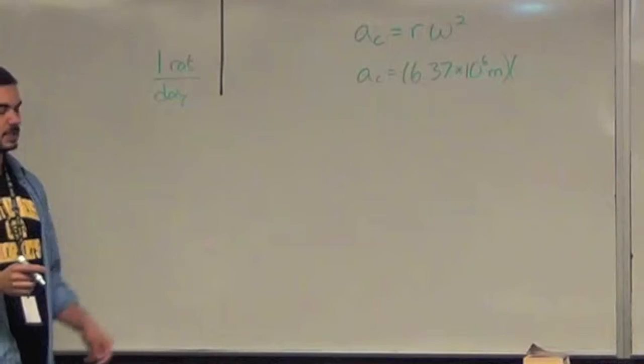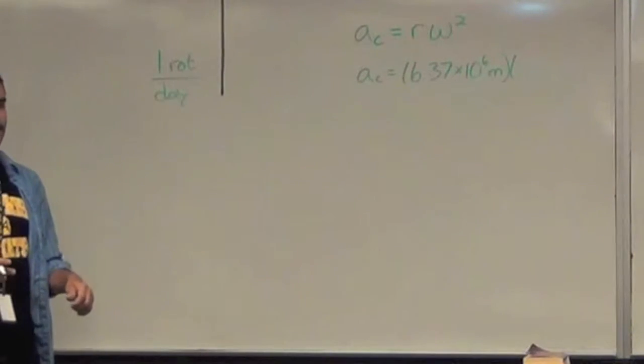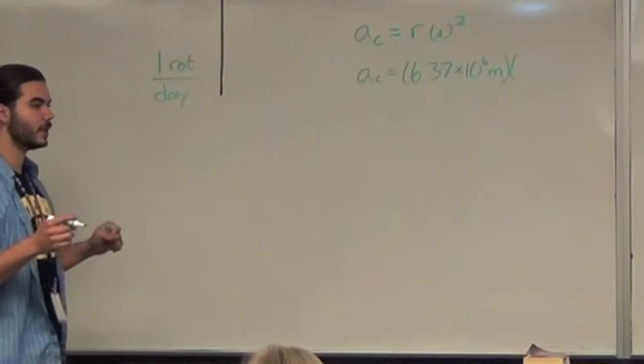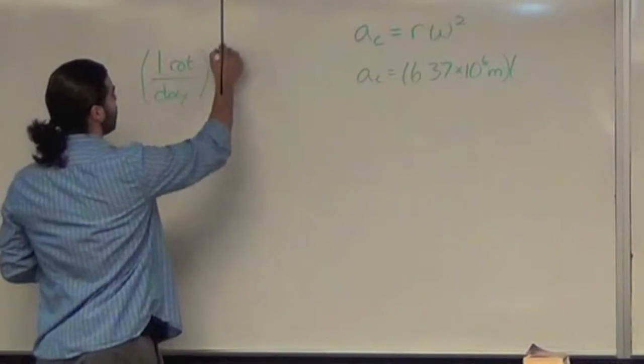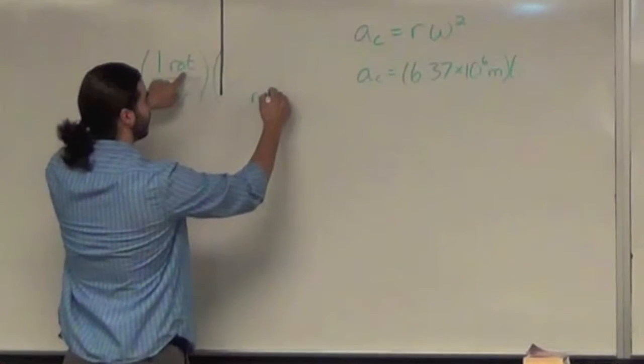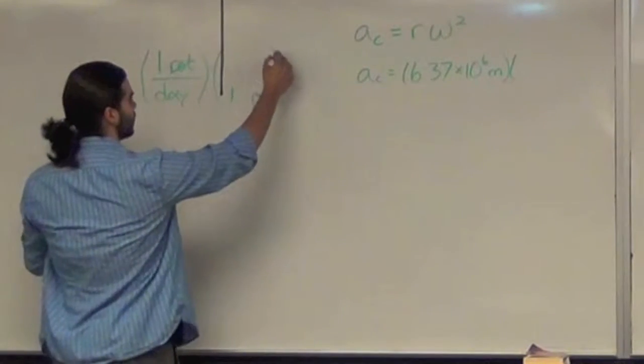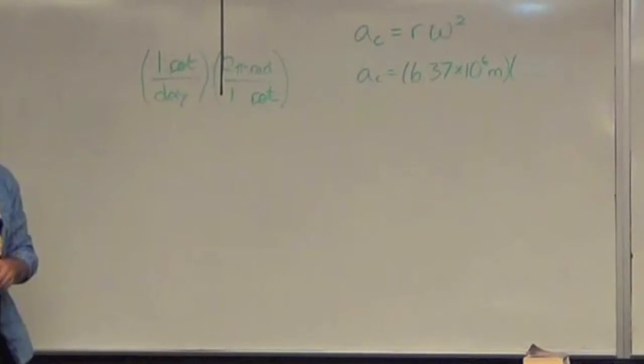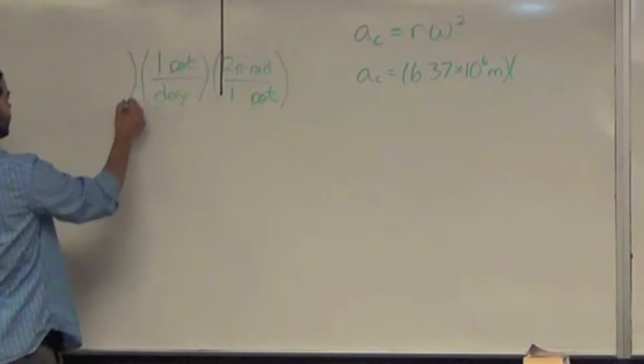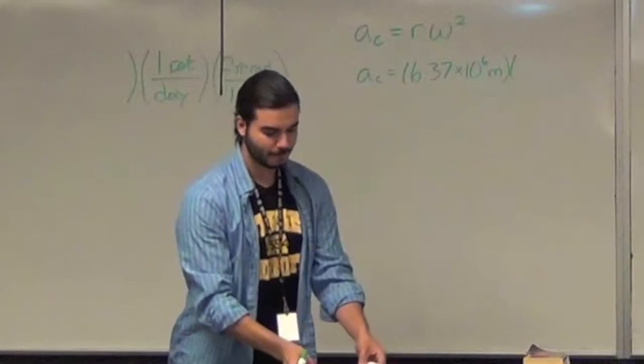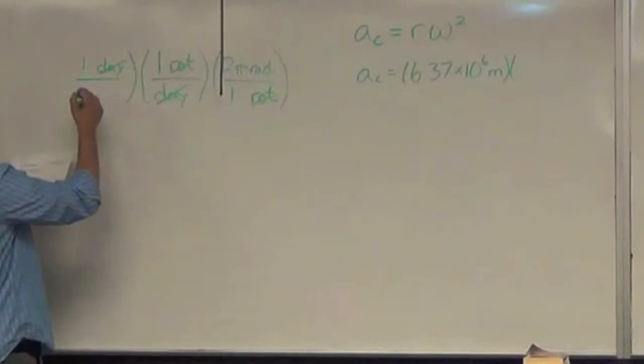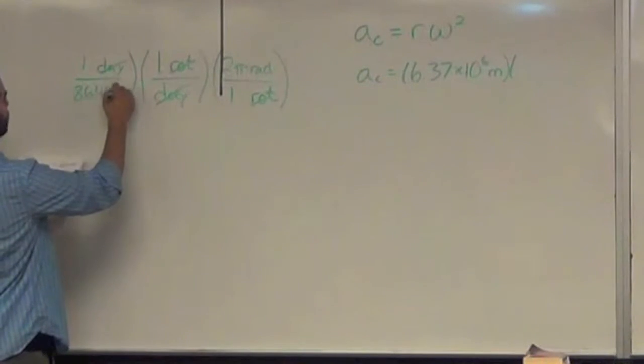So, how do you get from rotations per day to radians per second? How many radians are there in a rotation? Two pi radians in a rotation. So, do you multiply by two pi or divide by two pi? You multiply. You need rotations on the bottom here. So, the rotations in the denominator cancel with rotations in the numerator. And then, two pi radians. And now you have radians per day. How do you get from radians per day to radians per second? You just need to know how many seconds there are in a day. I will provide you with that number. Are we going to be multiplying by that number or divided by that number? Divided. We need days to be in the numerator now, so that this numerator day and this denominator day cancel. So, in one day, there are 86,400 seconds.